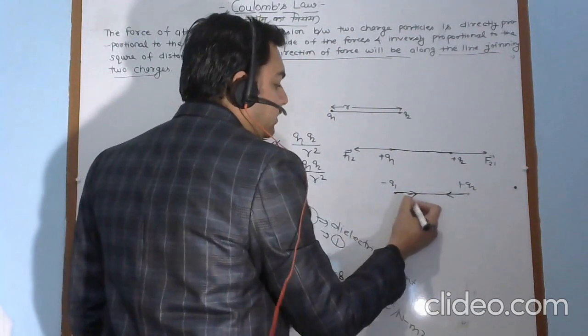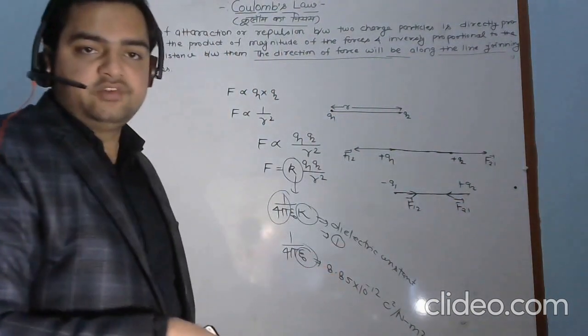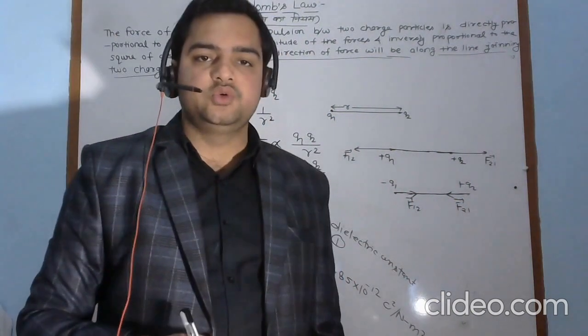We will call it F12 and F21. Force on q1 due to q2 is F12, and force on q2 due to q1 is F21.